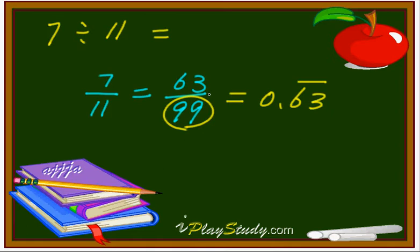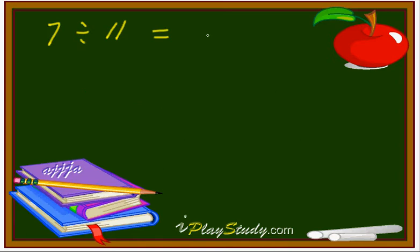One more time: seven divided by 11 means seven over 11, the same thing. So multiply nine times on both the numerator and denominator—63 over 99. So 0.63 forever, that's a repeating decimal number.